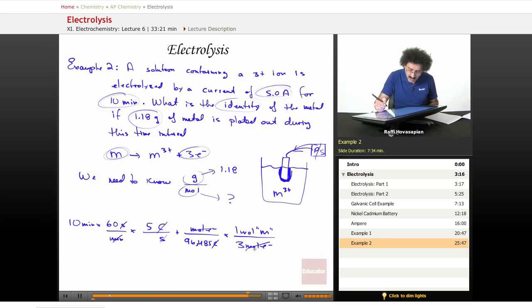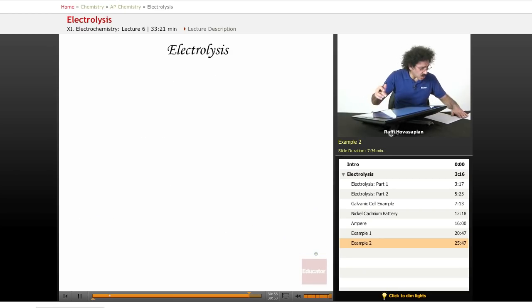Mole of electron, mole of electron. I'm left with moles of metal, and my final answer is going to be 0.0104 moles of metal. Now, let's go ahead and go here.